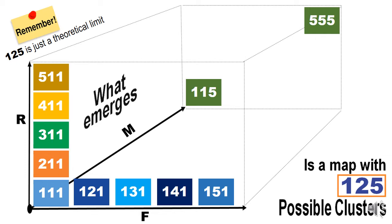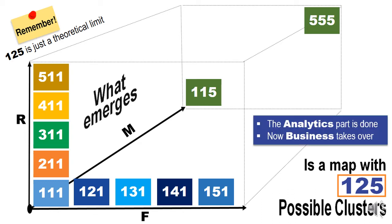Remember that 125 is just a theoretical limit. There need not be 125 clusters, because for some combinations of recency, frequency, and monetary there could be customers completely missing. Also, some of these combinations might not be market-wise possible. With this, the analytics part is done and the business takes over.